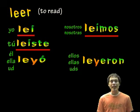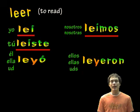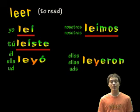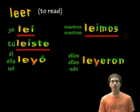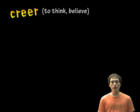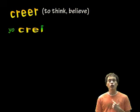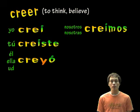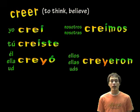Now, the tú form leíste — we have the accent mark because without it, it would just be leíste. And leímos without the accent mark would be leímos. So we have those accent marks to keep the extra syllable. Let's try creer, to think or believe. It is the same thing as leer. Yo creí, tú creíste, él creyó, ella creyó, usted creyó, nosotros creímos, ellos creyeron, ellas creyeron, ustedes creyeron.